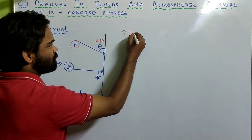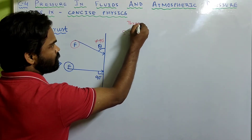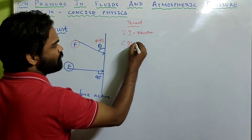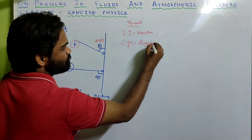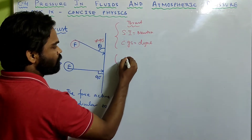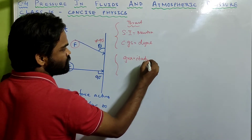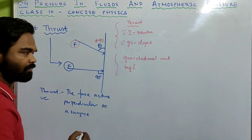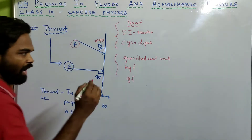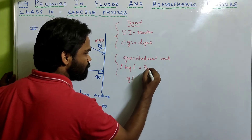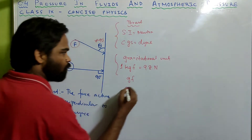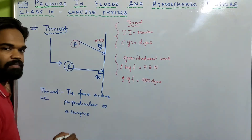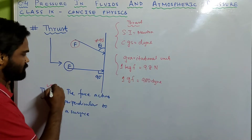The SI unit of thrust is Newton. The CGS unit is dyne. The gravitational unit is kgf and gram-force, where 1 kgf equals 9.8 Newton and 1 gram-force equals 9.8 dyne. So the unit for thrust is the same as for force.